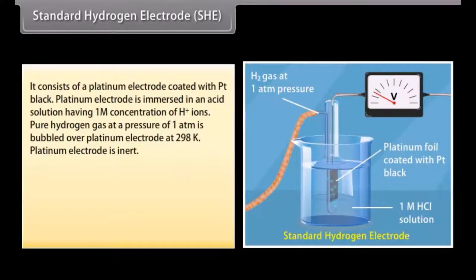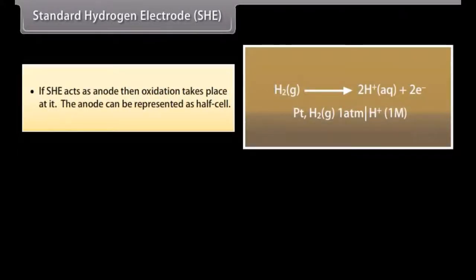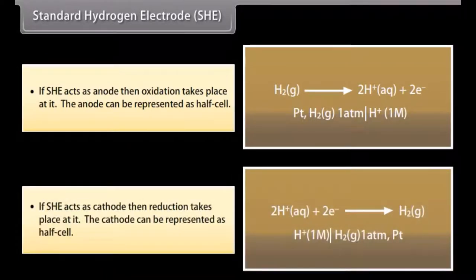Standard Hydrogen Electrode (SHE). It consists of a platinum electrode with platinum black, immersed in an acid solution having 1M concentration of hydrogen ion. Pure hydrogen gas at a pressure of one atm is bubbled over the platinum electrode at 298 K. The platinum electrode is inert; the half reaction takes place at its surface through which the inflow or outflow of electrons takes place. The hydrogen electrode can act as anode or cathode depending upon the nature of the second electrode with which it is combined. The electrode potential of the standard hydrogen electrode is taken as zero.